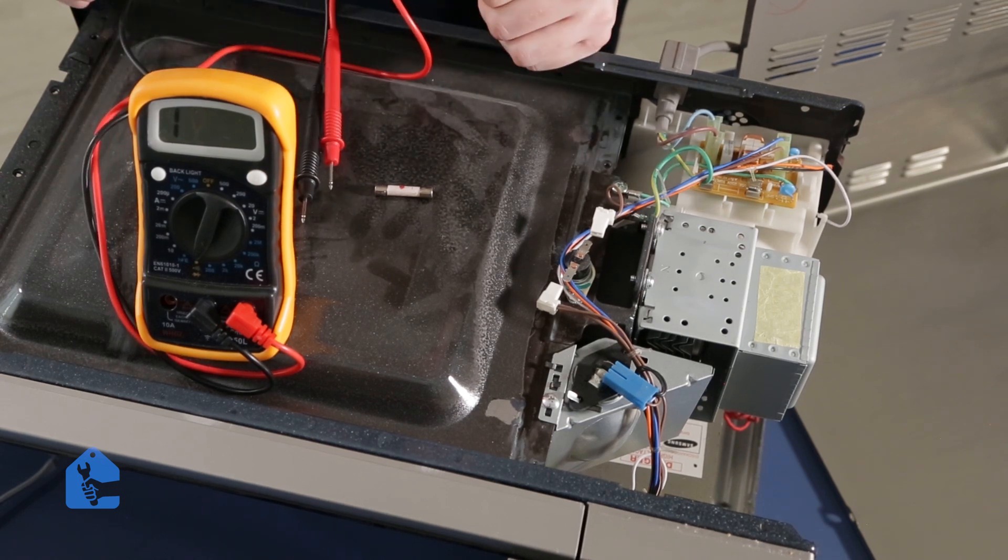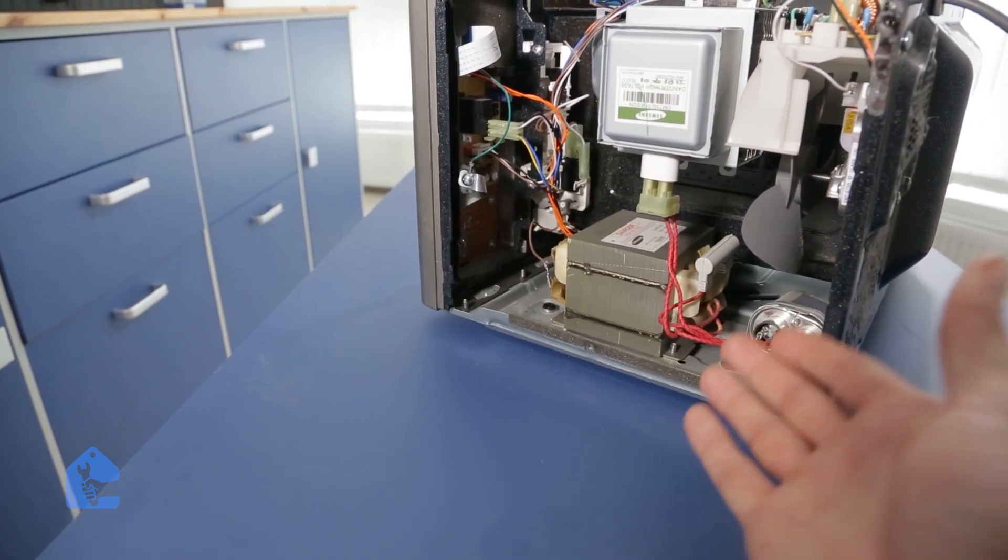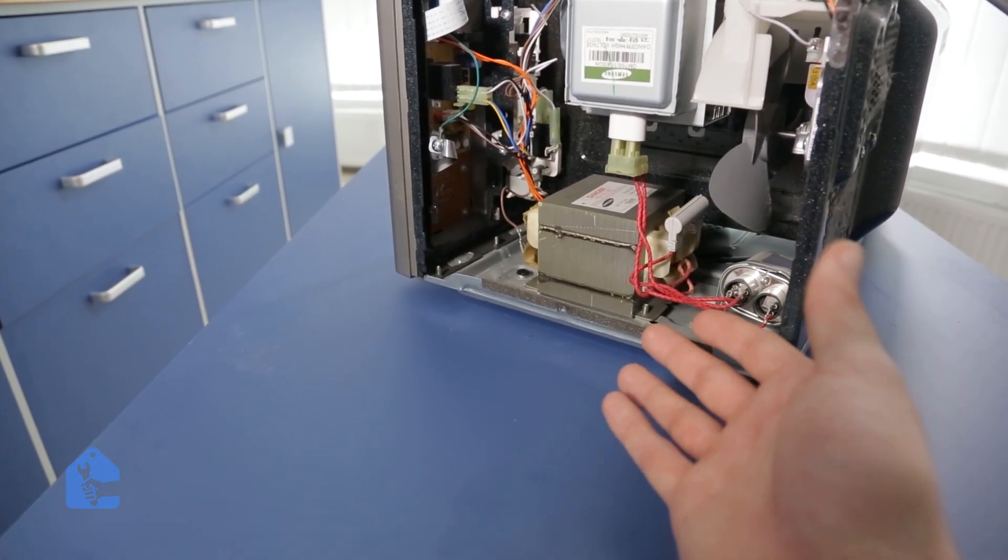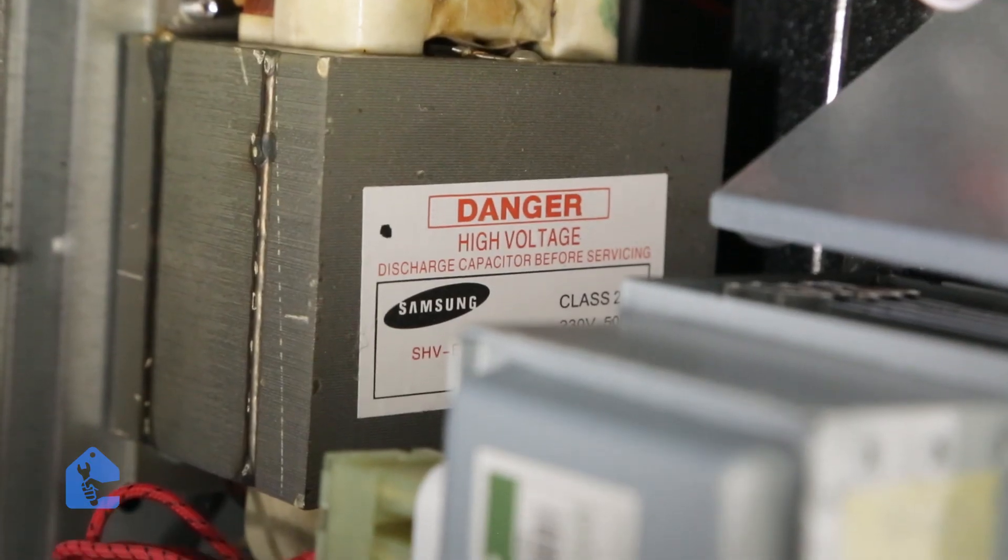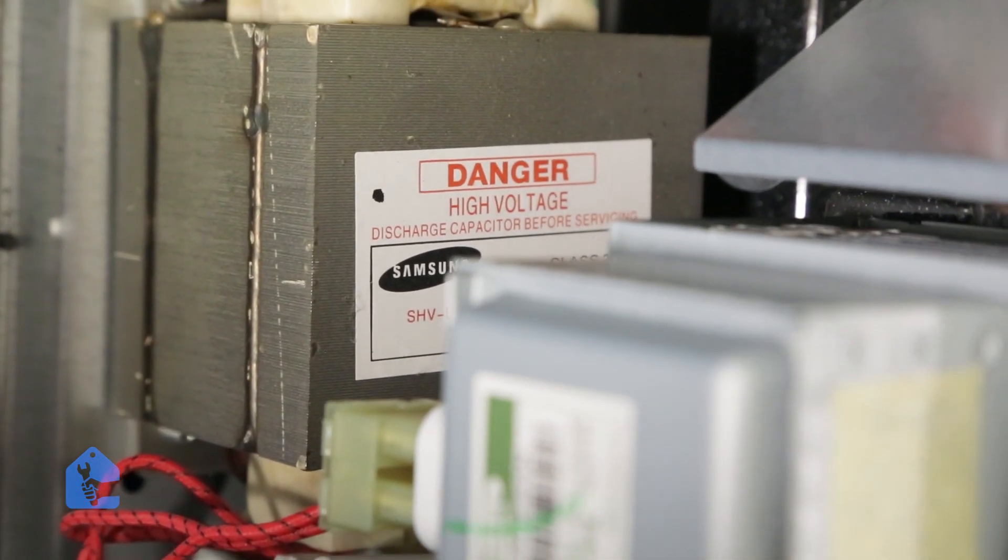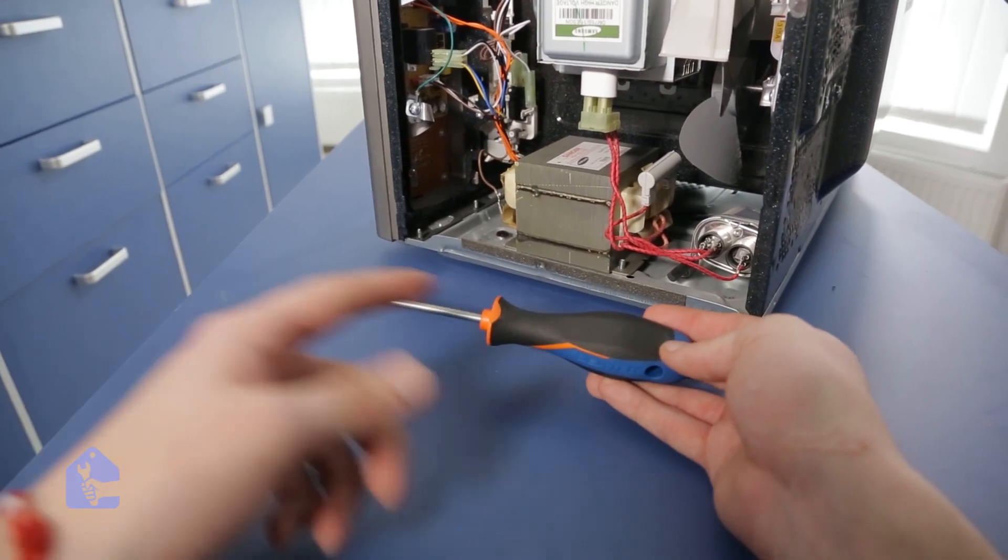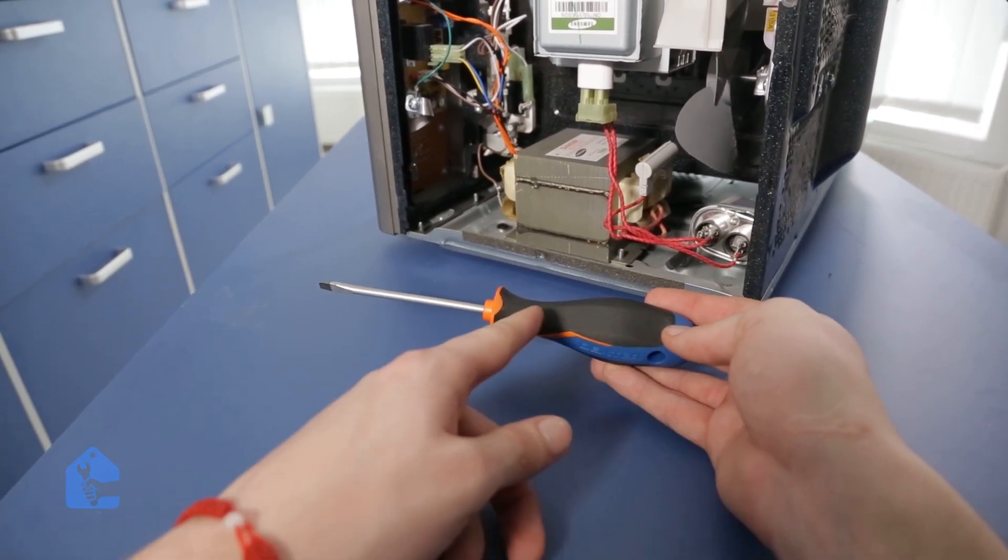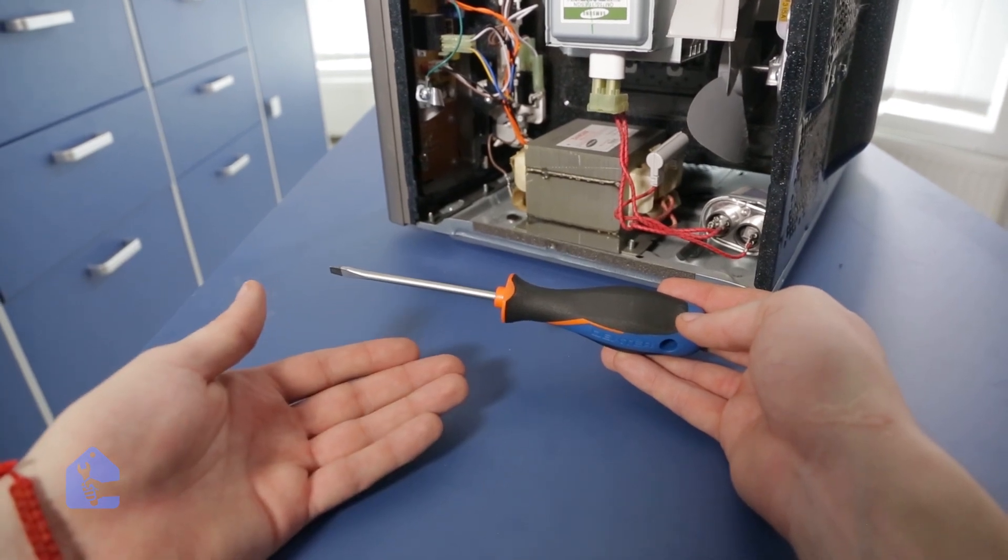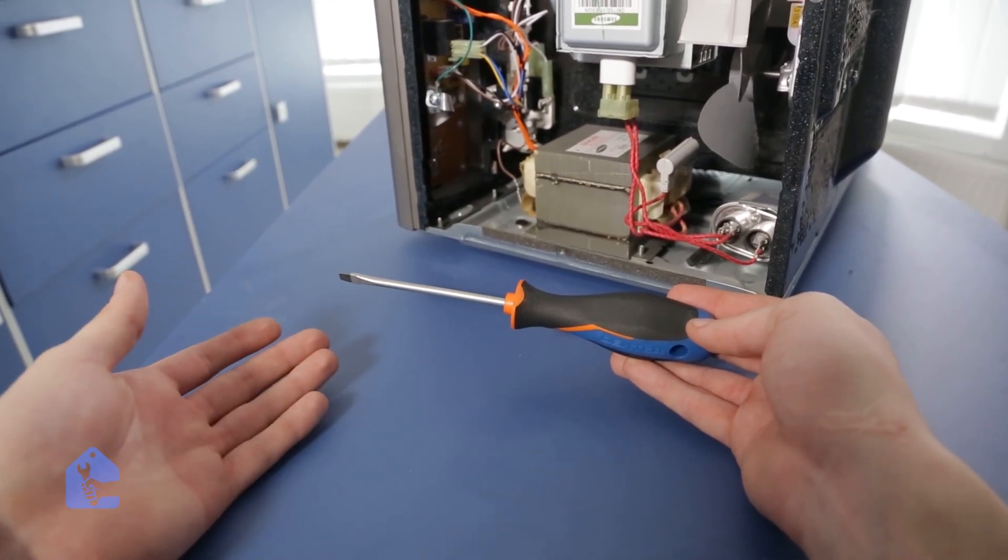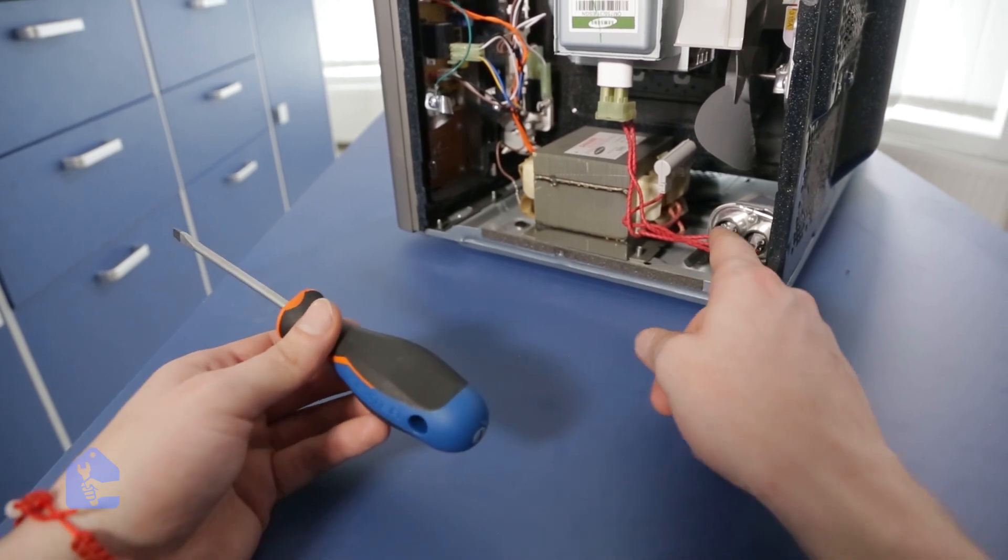I want to go ahead and test the magnetron next, but there is a capacitor in the way and it's fully charged and can be dangerous if not discharged. So first, grab a screwdriver that has a rubber handle like so, and what we're going to be doing is discharging the capacitor so we can safely work on the unit.